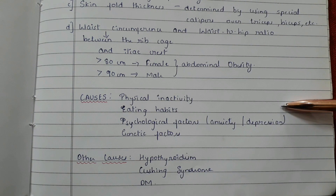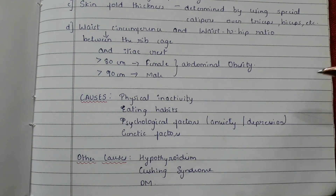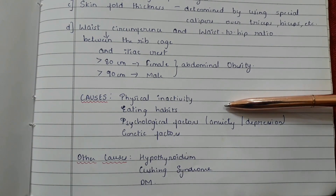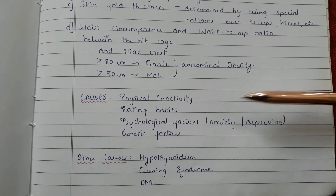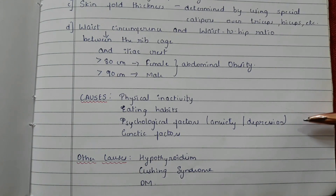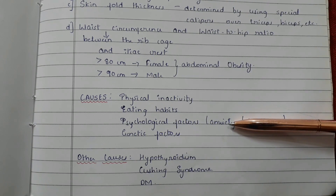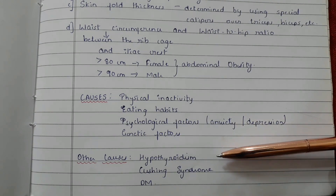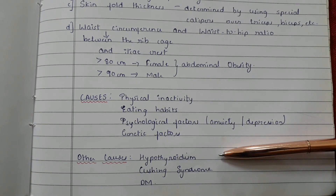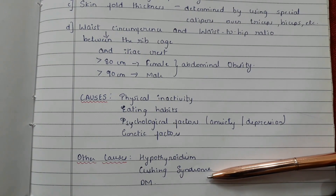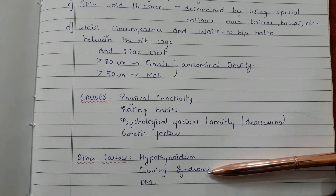Causes of obesity include physical inactivity, eating habits, psychological factors like anxiety and depression, and genetic factors. Other causes include hypothyroidism, Cushing syndrome, and diabetes mellitus.